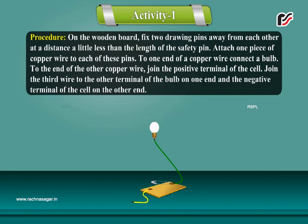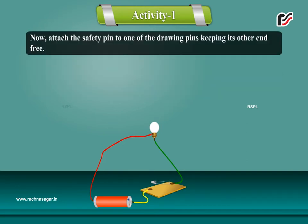To the end of the other copper wire, join the positive terminal of the cell. Join the third wire to the other terminal of the bulb on one end and the negative terminal of the cell on the other end.